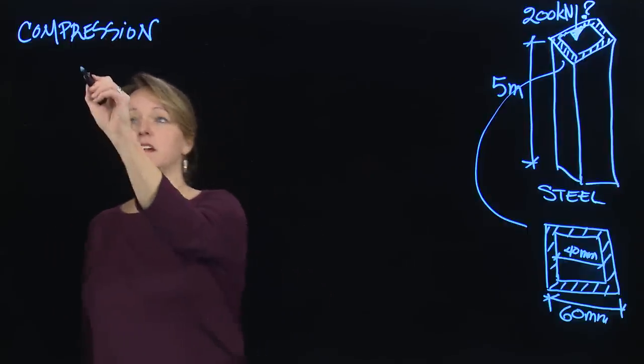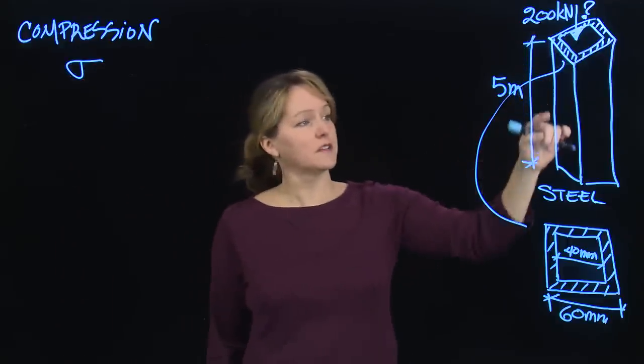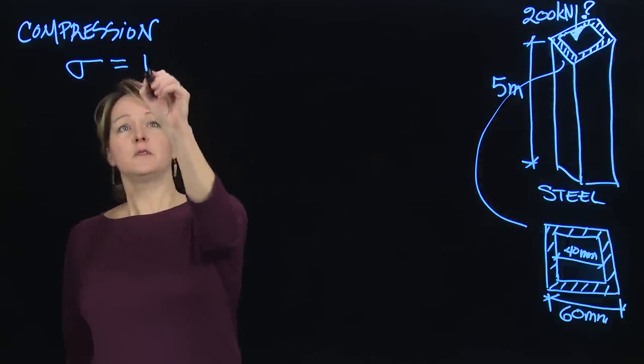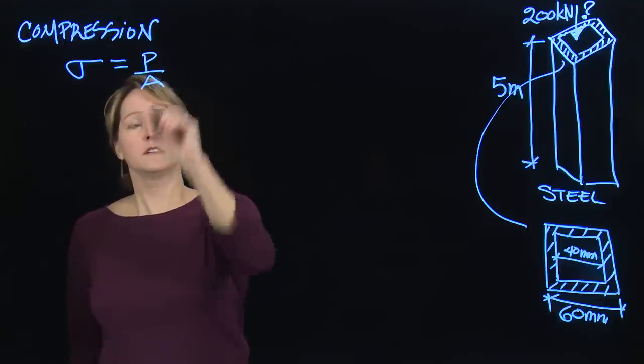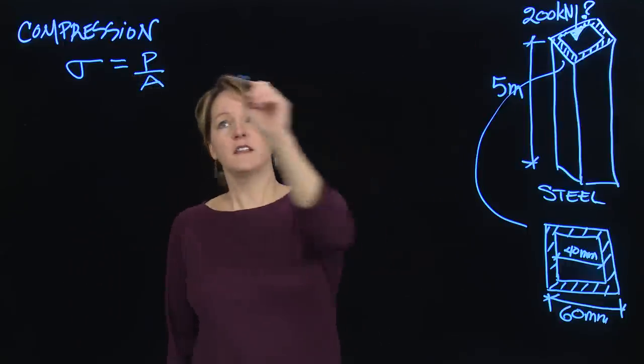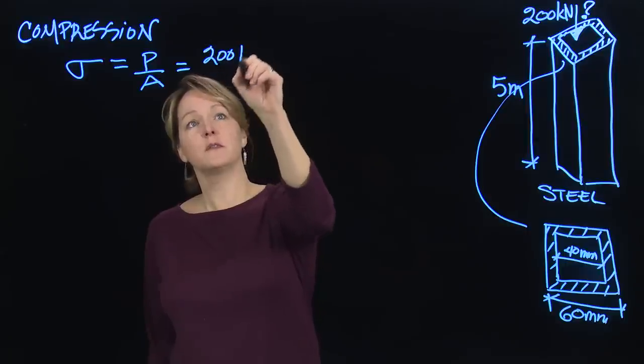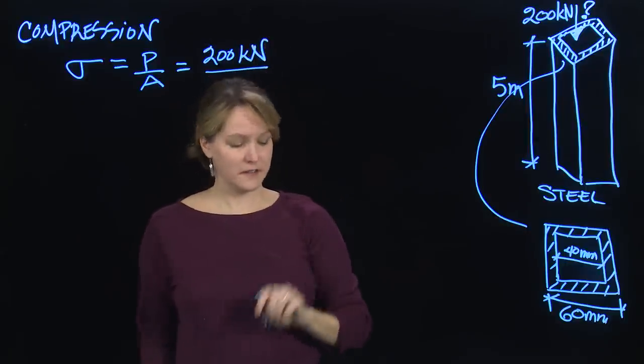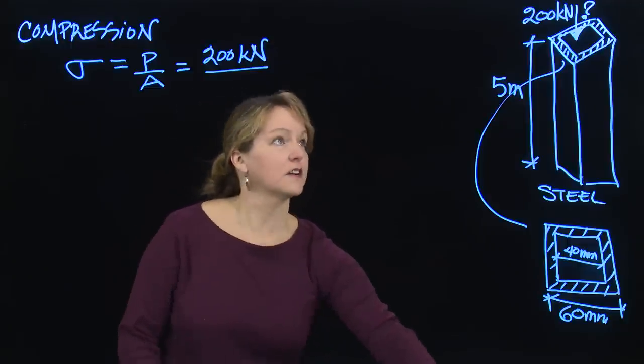So if I want to calculate the stress, so this compressive force is going to cause an internal stress as we get down the column, and that equals force over area. Fairly straightforward. So I take that force, we know the force is 200 kilonewtons, so that's what I want to try, and I'm going to divide by the cross-sectional area.